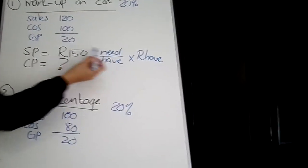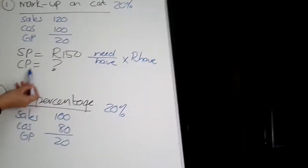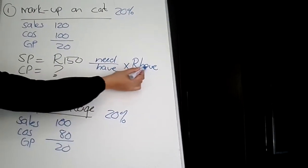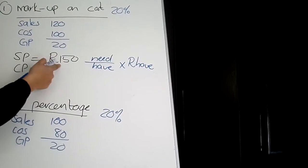So what is it that you need? You need the cost price. What is it that you have? You were given the selling price. And the Rand value there would be the R150 that was given to you.